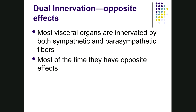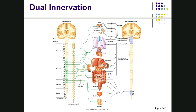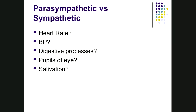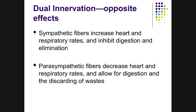Looking at a list of organs, you can predict the effects: sympathetic increases heart and respiratory rates and inhibits digestion and elimination, while parasympathetic decreases heart and respiratory rates and promotes digestion and the elimination of waste. These opposite effects define dual innervation throughout the body.